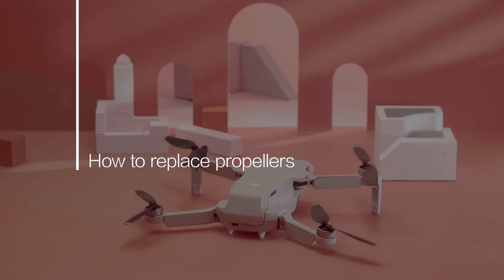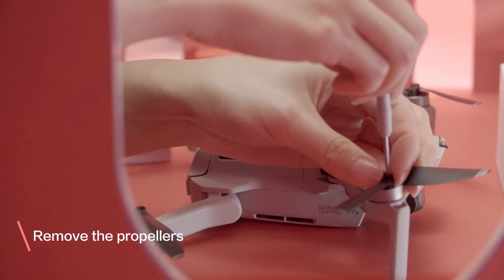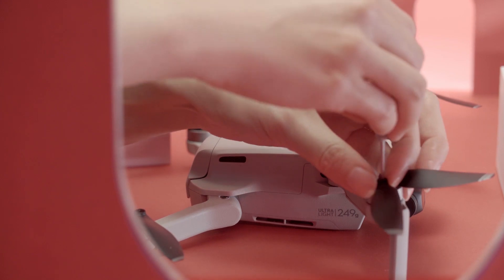How to Replace Propellers. Place the screwdriver on the screw's cross recess and rotate it counterclockwise to unscrew.